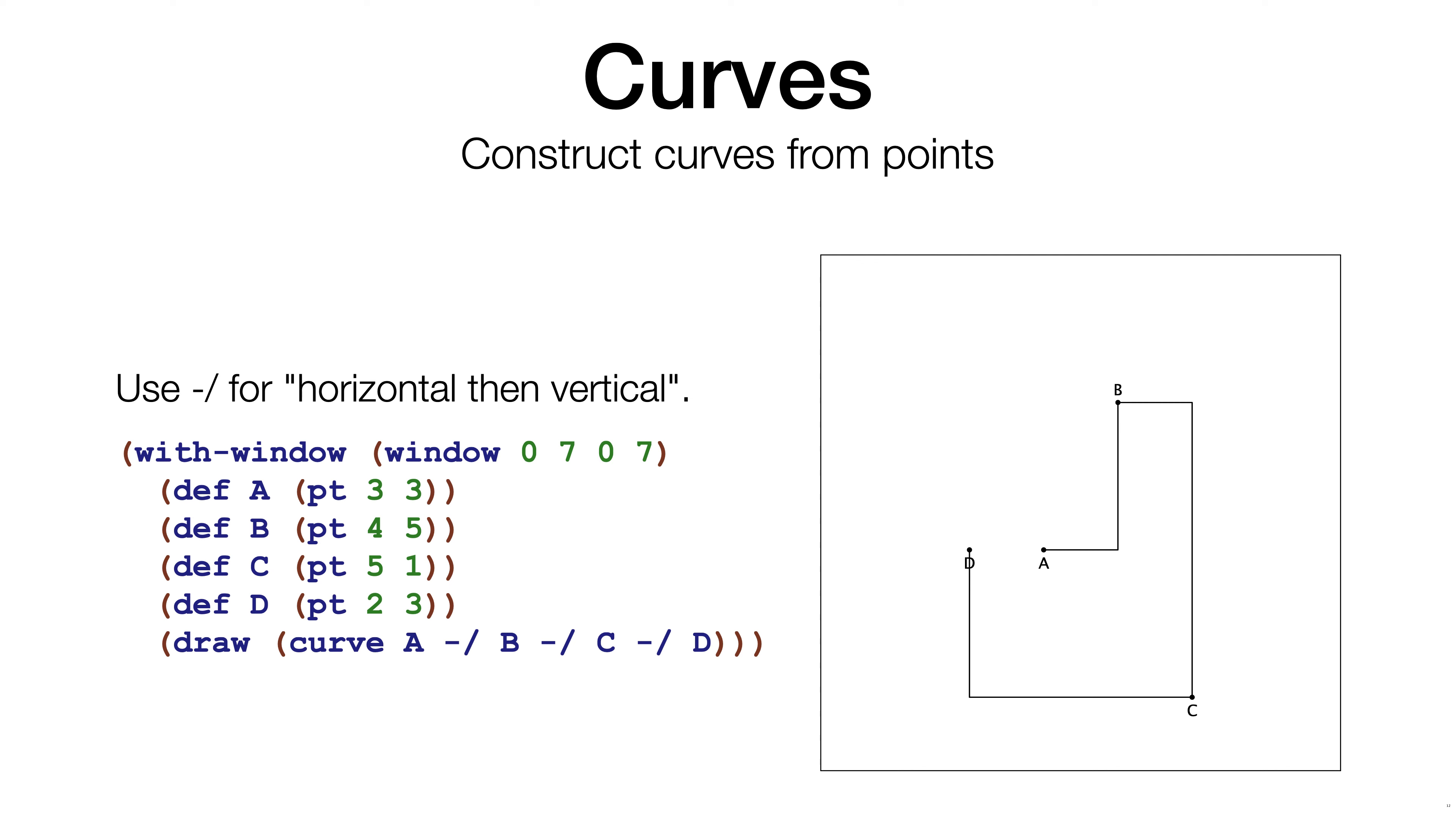This example features the same four points. This time, the connector is horizontal-then-vertical. So if you look at how A and B are connected, you see that the curve first moves horizontal and then vertical up to B. And from B to C, again, first horizontal, then vertical.